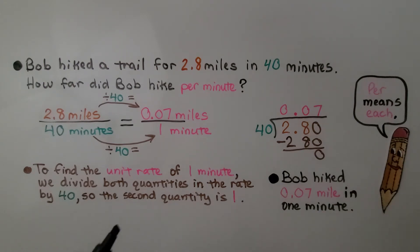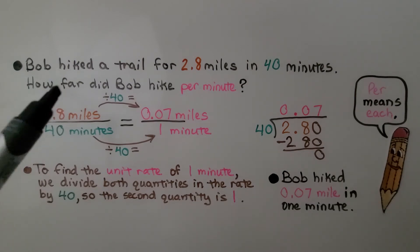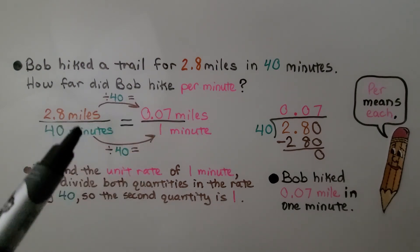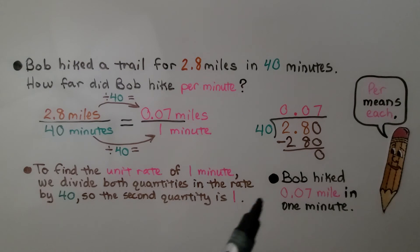So to find the unit rate of one minute, we divide both quantities in the rate by 40, so the second quantity is one. 2.8 divided by 40 and 40 divided by 40. So we know Bob hiked 0.07 miles in one minute. That was his unit rate.